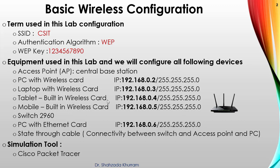Without IP addresses, all devices can connect but cannot communicate with each other — that's why we're assigning IPs. We're using the 192.168.0.x range with subnet mask 255.255.255.0. The simulation tool used in this lab is Cisco Packet Tracer.